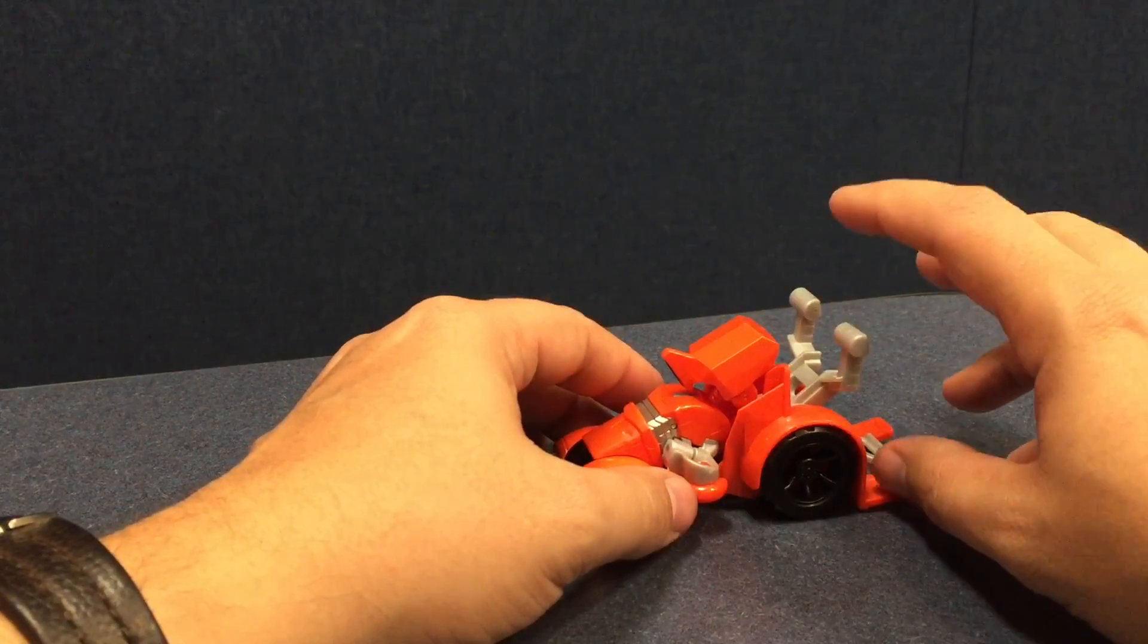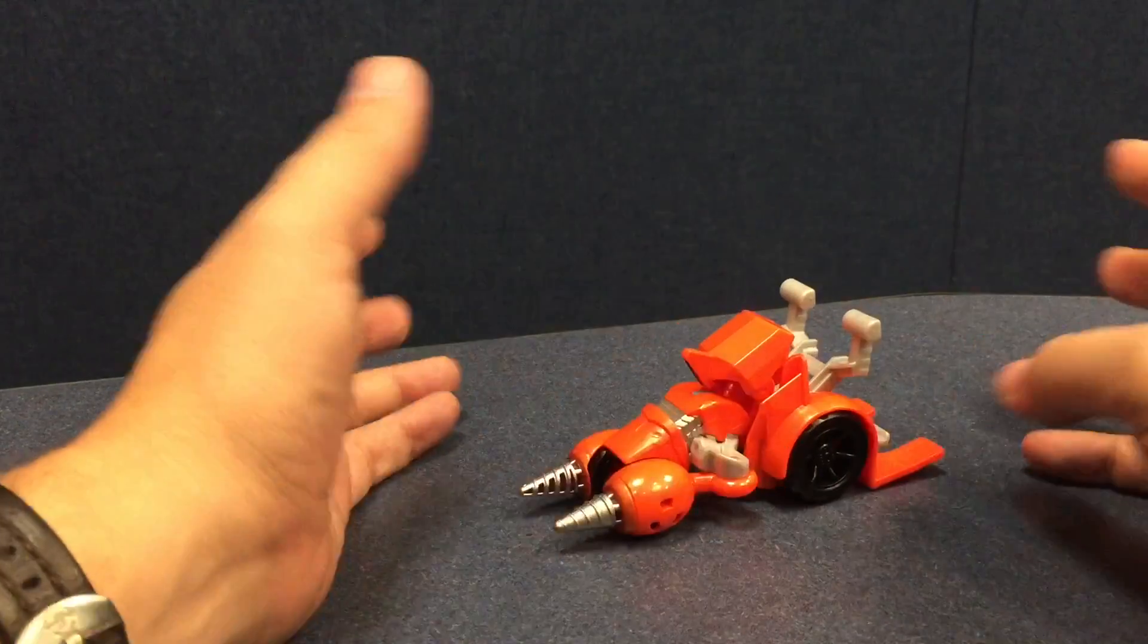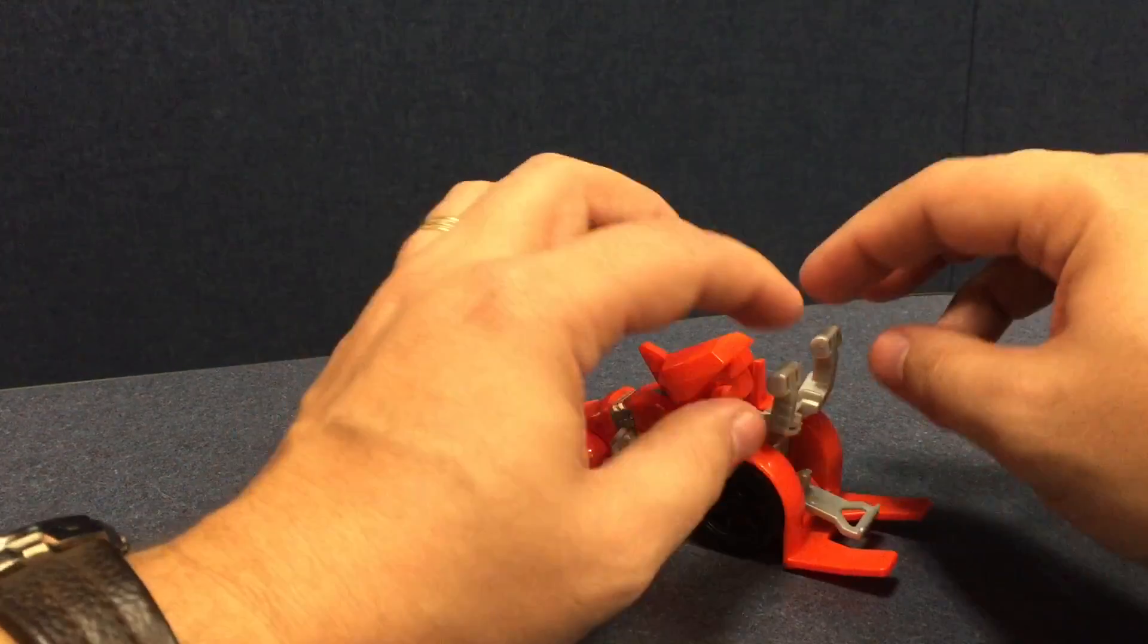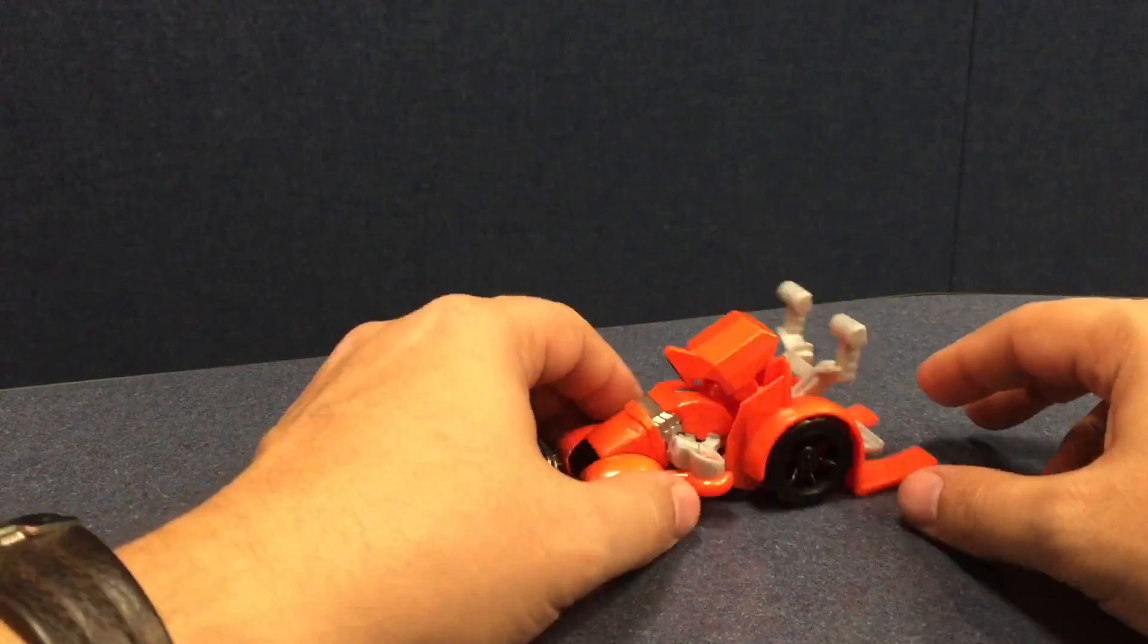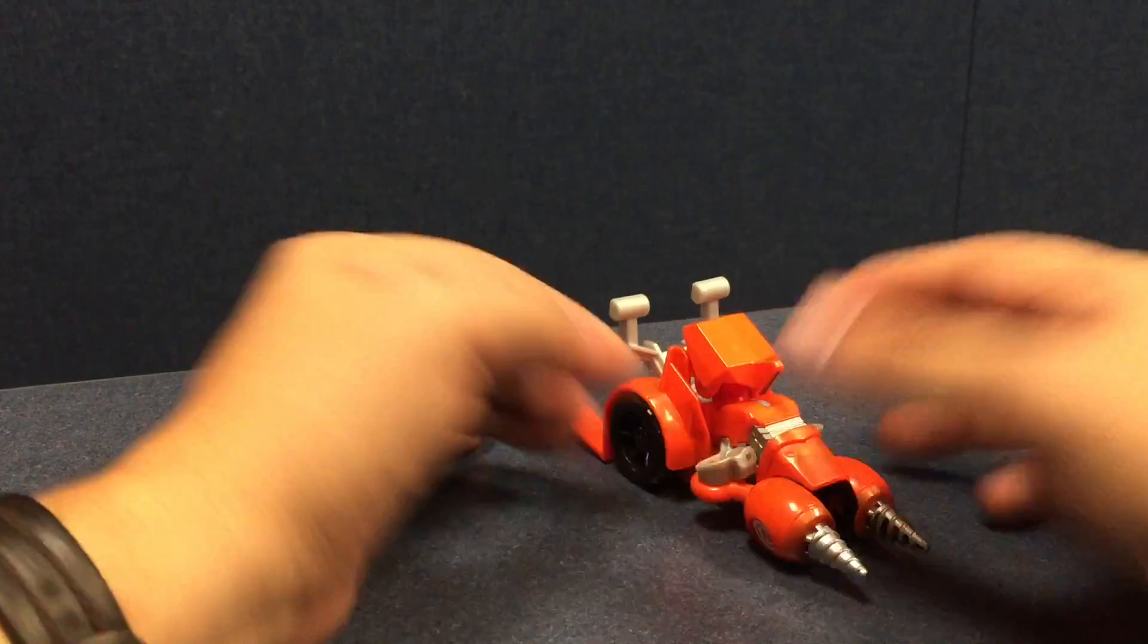There might be some humanoid figures about the size that might have hands that could hold this, but he doesn't, unfortunately, work with any of the current Transformers. Like I said, these handles—they are handles. You can see they're handles and foot plates here, but they don't fit in the fists of any of the current figures that I found.